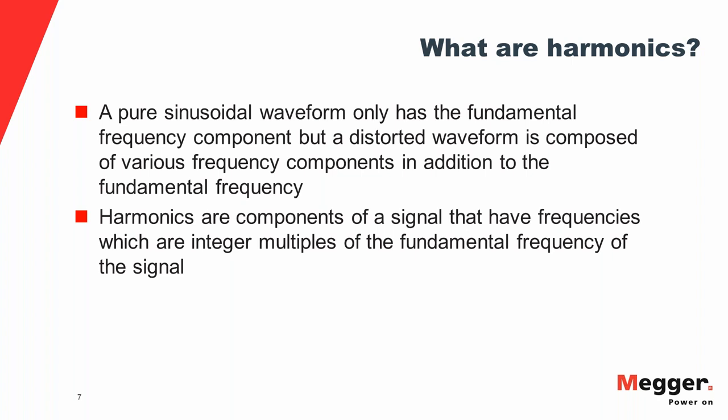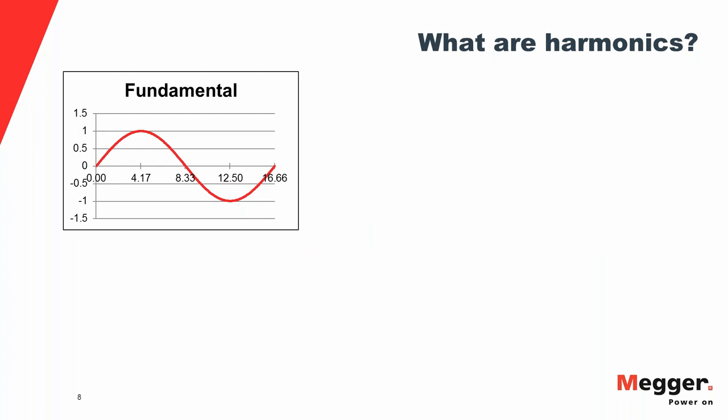But in real life, there is always some amount of distortion present in the waveform — voltage or current — because there are other frequency components present apart from the fundamental. Those frequency components produce distortion. Frequency components with frequencies that are integer multiples of the fundamental frequency are called harmonics. A clean sinusoidal waveform has a peak magnitude of one and completes one cycle in 16.66 milliseconds, indicating a 60 Hz wave.